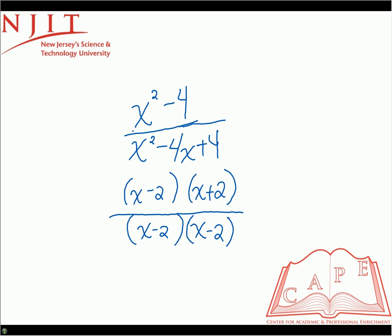That would be x minus two times x minus two. In this case one of the x minus twos in the denominator can cancel with the x minus two in the numerator, and we're left with our final answer which is x plus two over x minus two.